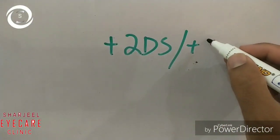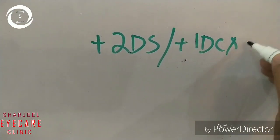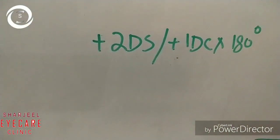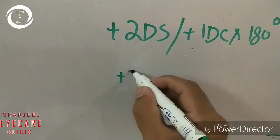Now take another example. Take plus 2 sphere, plus 1 cylinder at 180 degrees. Add cylinder and sphere, you will get plus 3 diopter sphere.